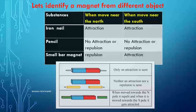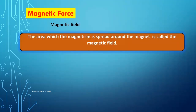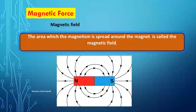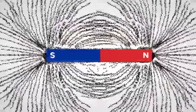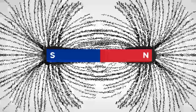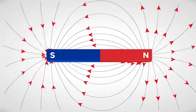By using this practical we can identify the magnet from different objects. Magnetic force — under that we discuss the magnetic field. The area in which magnetism is spread around the magnet is called the magnetic field. This video shows the magnetic field of a bar magnet.